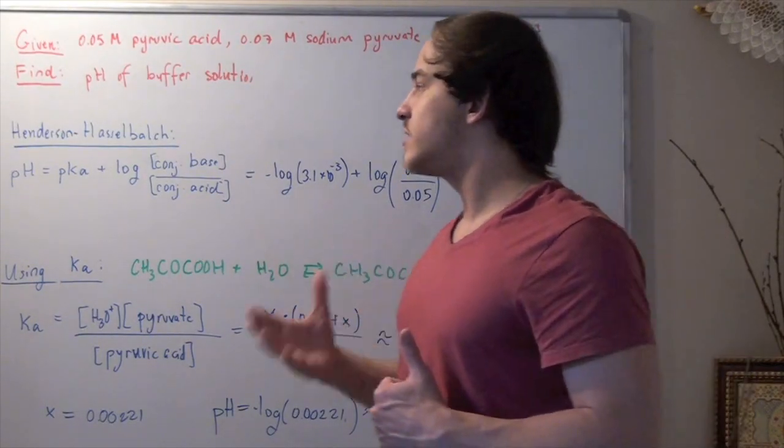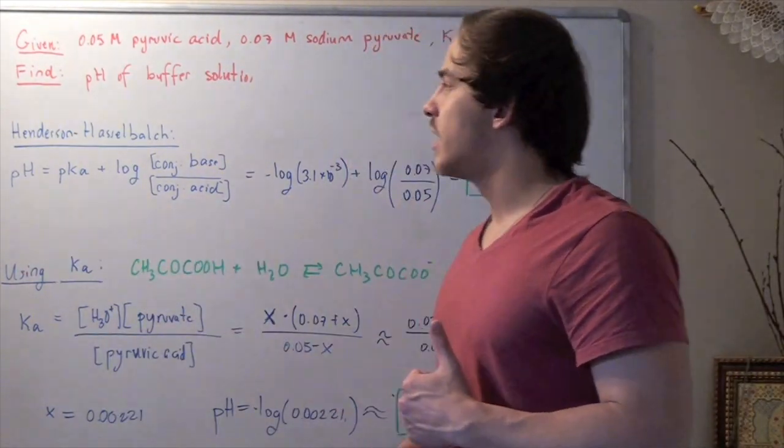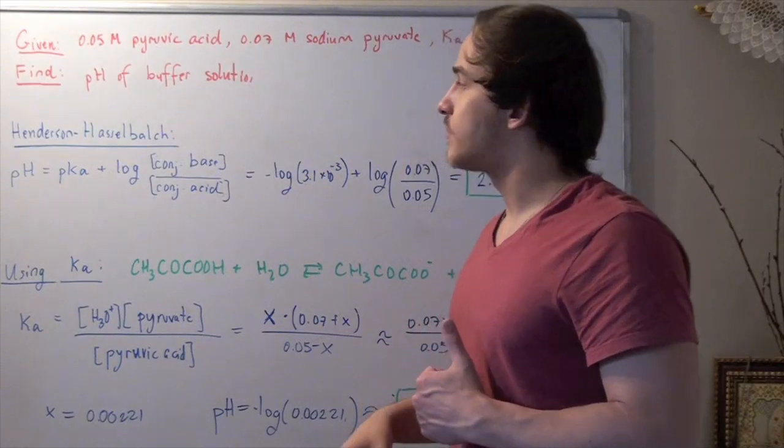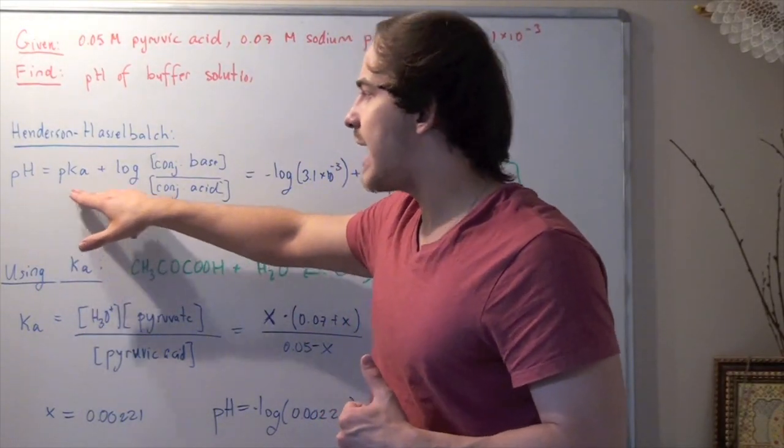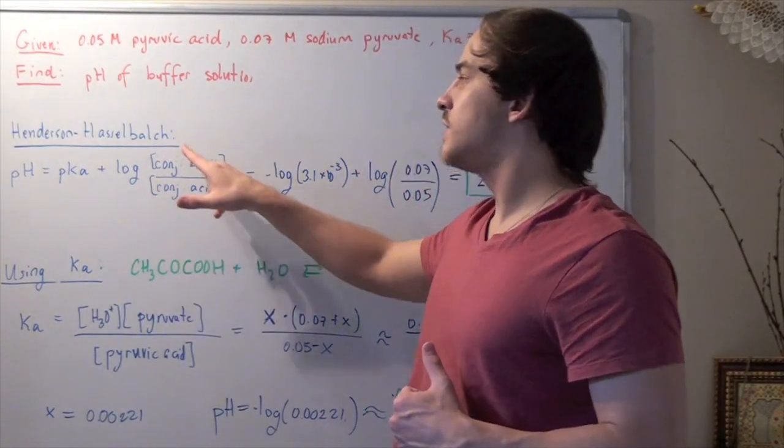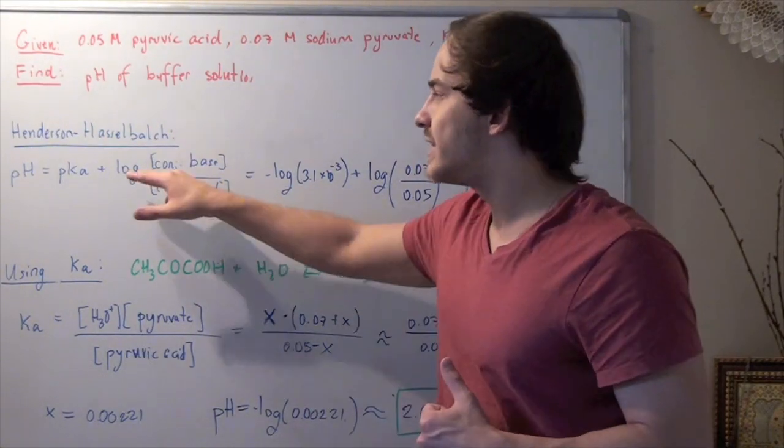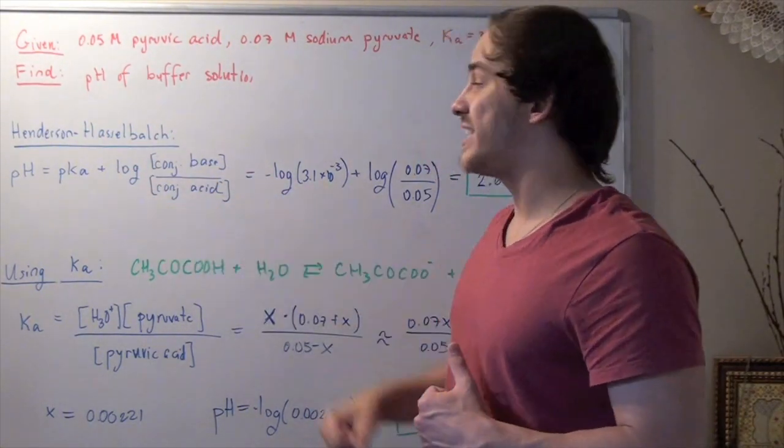Let's do the first method first. Our pH equals pKa plus log of the concentration of conjugate base divided by the concentration of conjugate acid.